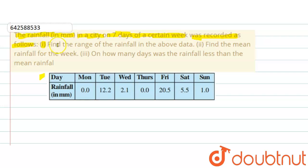First says find the range of the rainfall in the data. Second says find the mean rainfall for the week. The last part says on how many days was the rainfall less than the mean rainfall. So we have to find three things: first is range, second is mean, and the third is how many days rainfall was less than the mean rainfall.